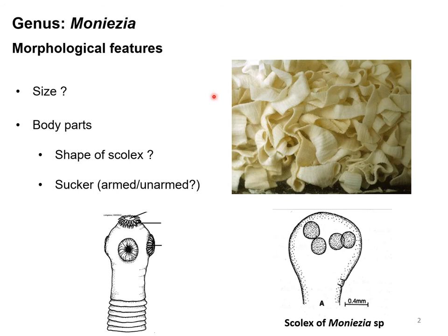For all Moniezia species, the size of this parasite is very large, ranging from four to eight meters in length, and their breadth is also very high, around 1.6 to 2.6 centimeters. Regarding their body parts, the body of a cestode is divided into three portions: the head, the neck, and the rest is called the proglottid.